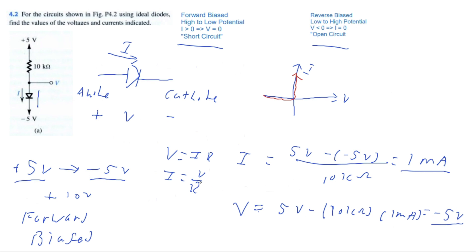Let's do a sanity check. If the voltage is negative five volts here, and then we cross this diode that acts like a short circuit, there should be no voltage drop. Sure enough, we are still at negative five volts at the end of the circuit. Part A is solved.